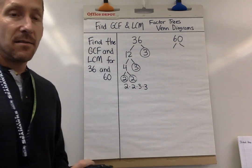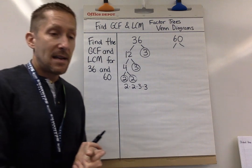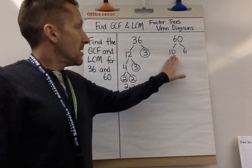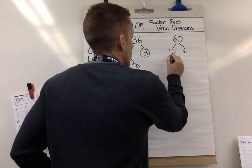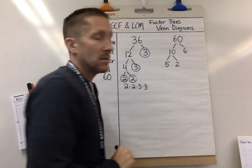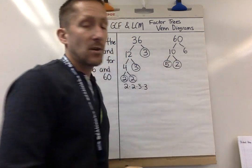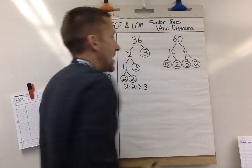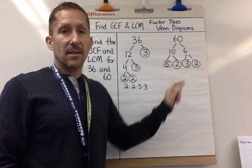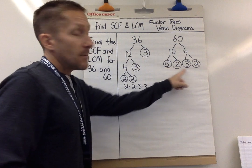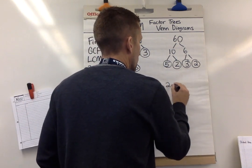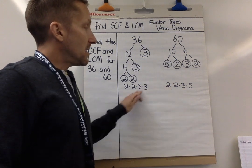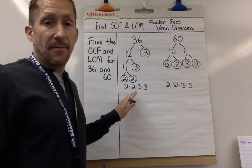Now I'm going to do the exact same thing with 60. There are many ways — 2 times 30, 3 times 20 — but the one that jumped into my mind first was 10 times 6. Can 10 break down? Can 6 break down? Yes. 10 breaks down into 5 times 2, and I circle those. 6 breaks down into 3 times 2, and I circle those. So the prime factorization for 60 is 2 × 2 × 2 × 3 × 5.